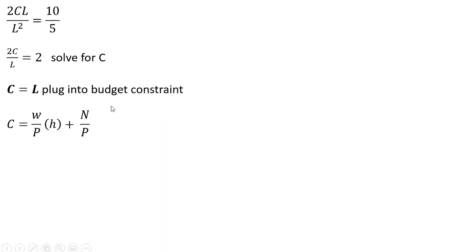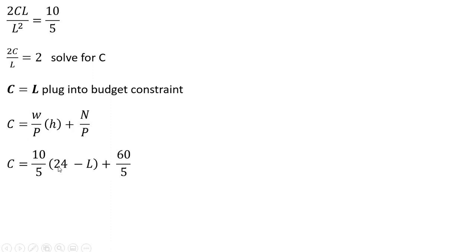Next, we plug this result into the budget constraint. The budget line is: consumption purchases equal the real wage times hours of work plus real non-labor income, where n divided by the price level gives real non-labor income. Substituting in: the wage is 10, the price level is 5, hours of work equals 24 minus l, non-labor income is $60, and the price level is 5. Simplifying the right-hand side gives c equals 60 minus 2l.